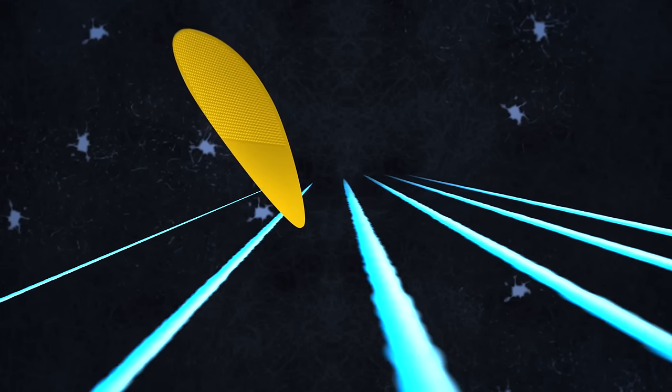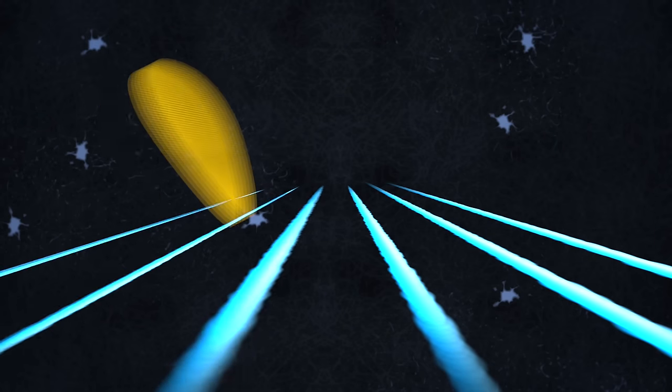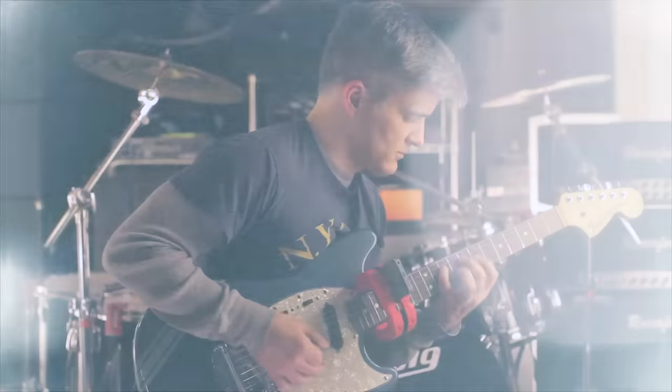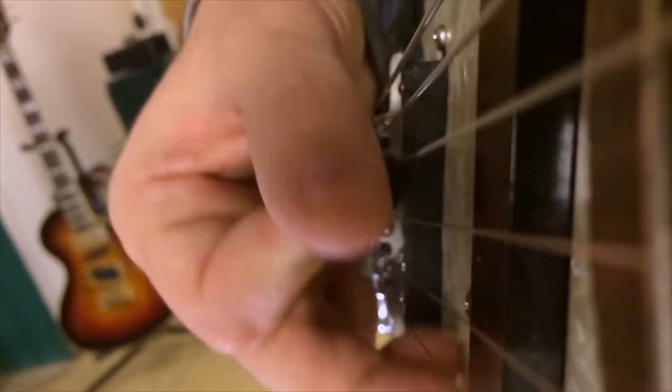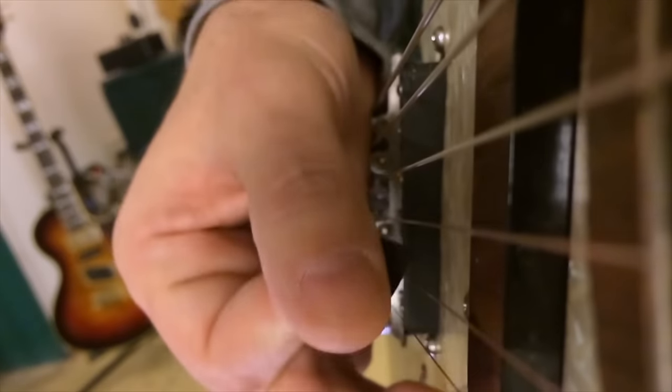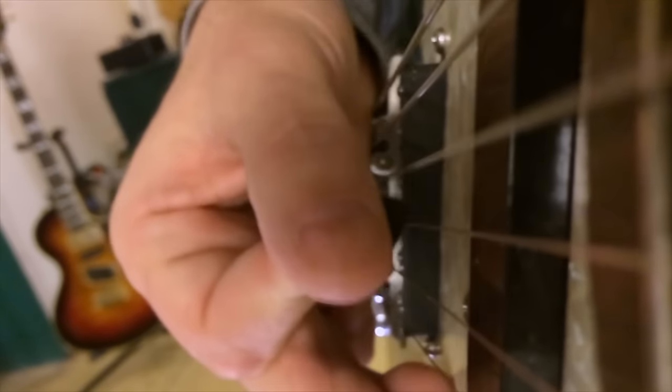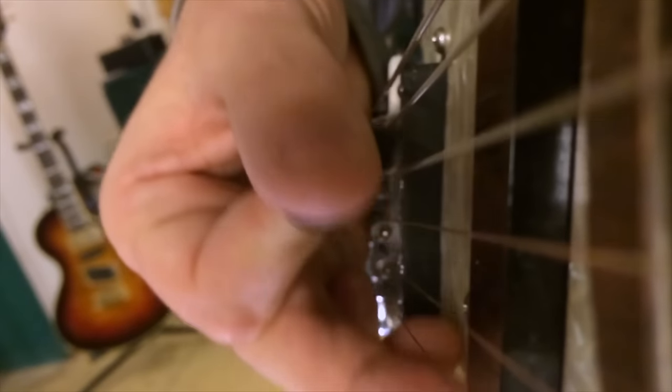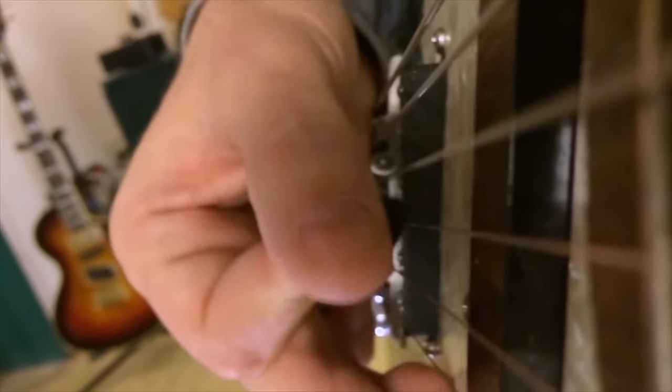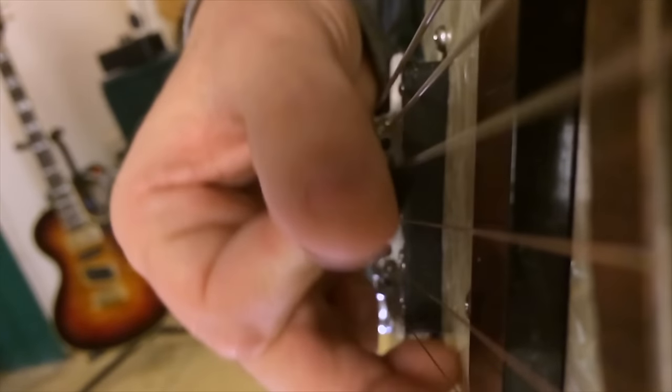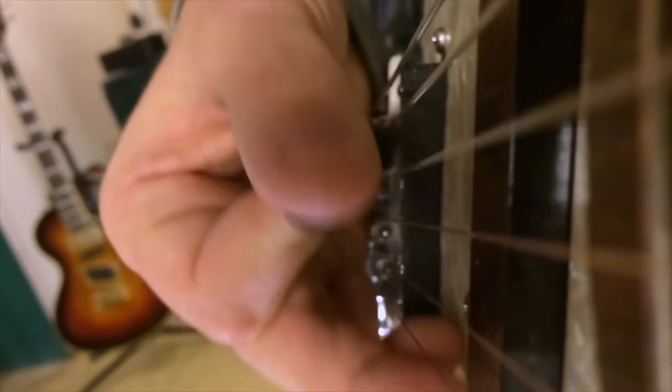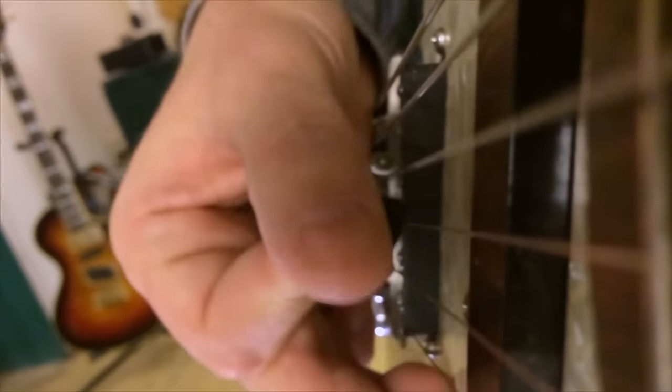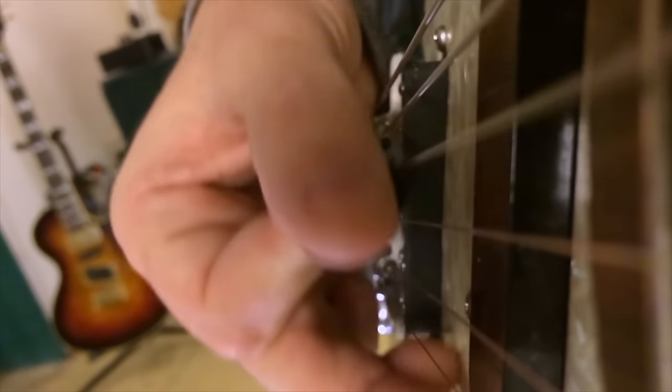But as an experiment, what would happen if we did try to switch strings after those downstrokes? Well, this might happen. This is the Paul Gilbert lick played intentionally with only downward pick slanting. You can see clearly that the pick is hitting the next higher string instead of getting over it. And we know from anti-gravity that this is what we call swiping. Now, in this case, it makes sense. In the downward pick slanting world, technically, you can't switch strings after a downstroke because the pick is stuck between the strings. So one possible solution to this problem is to not even bother getting over the string at all. Just play right on through it.